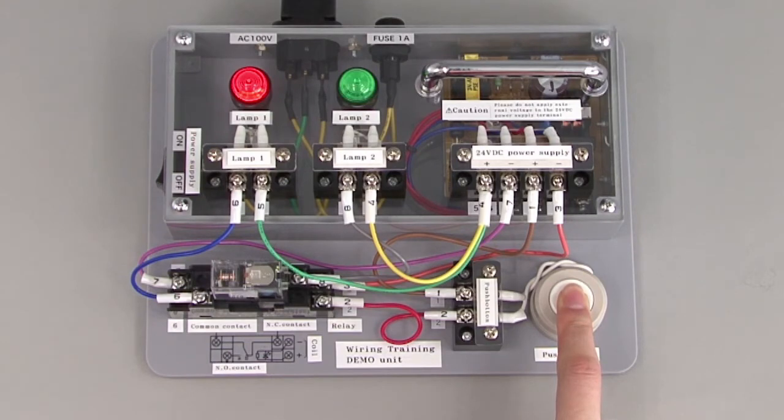If you press the push button, electricity runs through the coil of the relay and the normally open contact is actuated. Then the red light turns on and the blue light turns off.